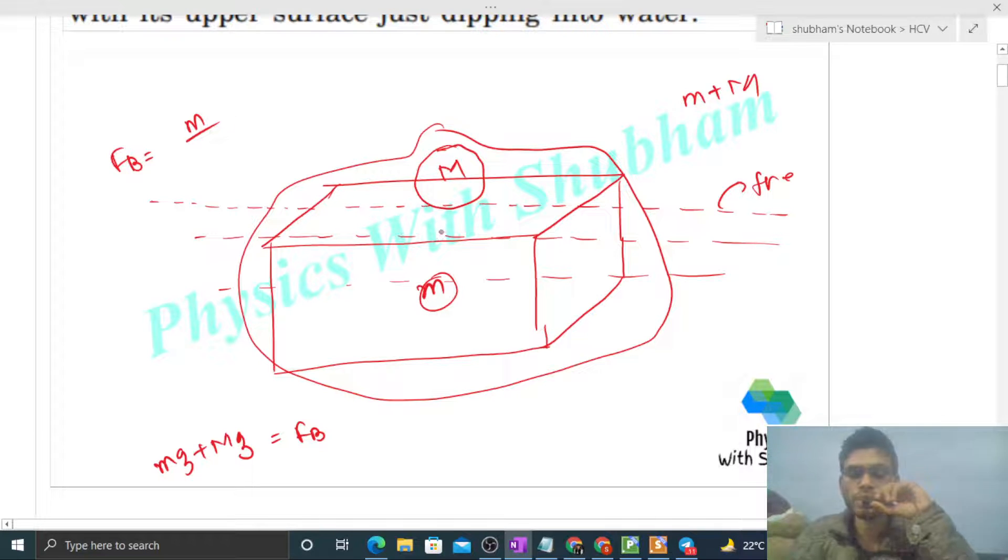Now density of the cube, that is density of the wood, because this cube is made up of wood. And its specific gravity given was 0.8, so 0.8 into density of water is the density of the wood. And mass upon density is volume of this cube, right? So volume submerged into density of water into g, this is the value of buoyancy force.